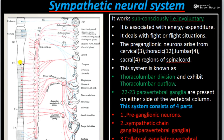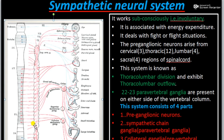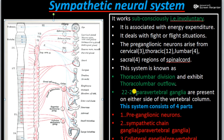The sympathetic neural system consists of four parts: preganglionic neurons, which arise from the spinal cord from the cervical region to the sacral region; sympathetic chain ganglia; collateral ganglia; and postganglionic neurons. The ganglia are where the cell bodies of neurons are located — if the cell body of a neuron is located outside the brain and spinal cord, it is known as a ganglion. There are 22 to 23 pairs of paravertebral ganglia present on either side of the vertebral column.